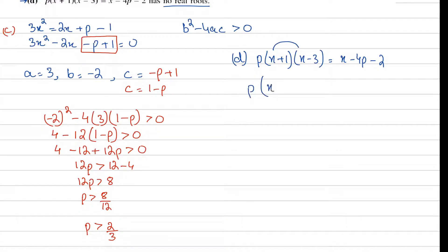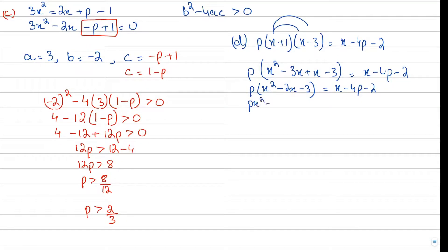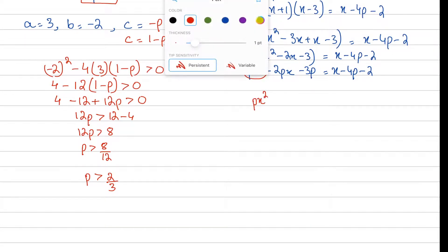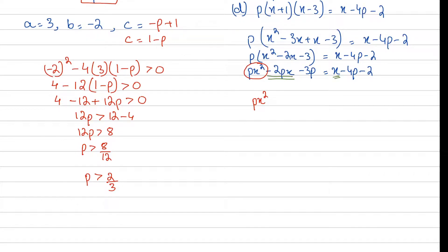Part d is saying the keywords are no real roots. Let's write the question: p times (x plus 1)(x minus 3) equals x minus 4p minus 2. First we have to do algebra - open it and rearrange it. So x times x is x squared, x times minus 3 is minus 3x plus x minus 3, and this is all carried forward.